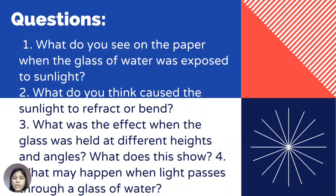Questions: Number one — what do you see on the paper when the glass of water was exposed to sunlight? Number two — what do you think caused the sunlight to refract or bend? Number three — what was the effect when the glass was held at different heights and angles, and what does this show? Number four — what may happen when light passes through glass?